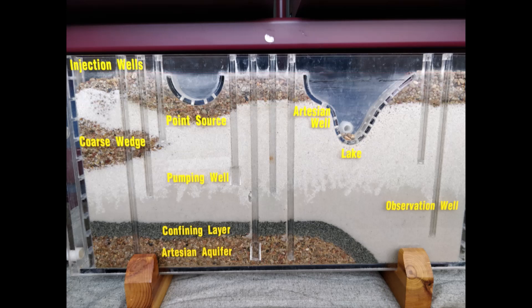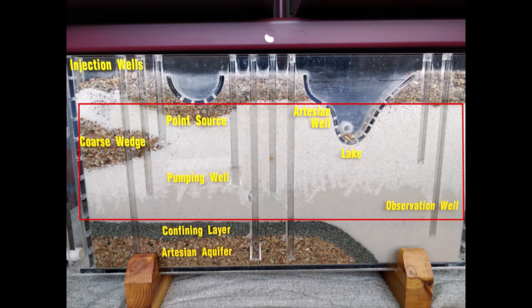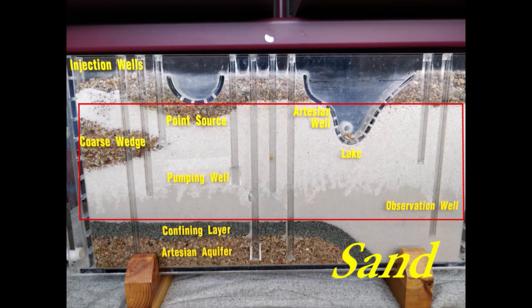What about this second layer? This is our sand. It has medium sized particles, medium pore space, and is less permeable or porous than gravel.